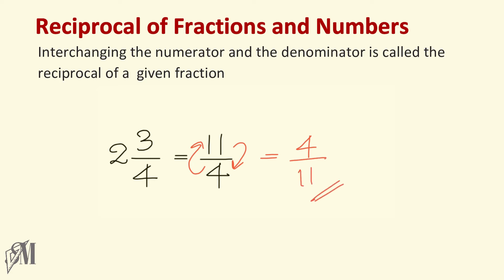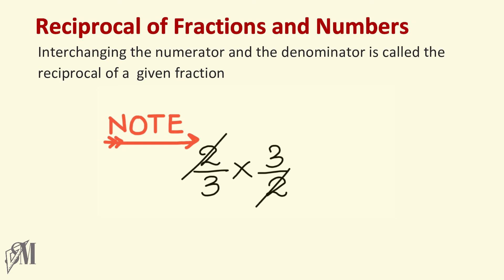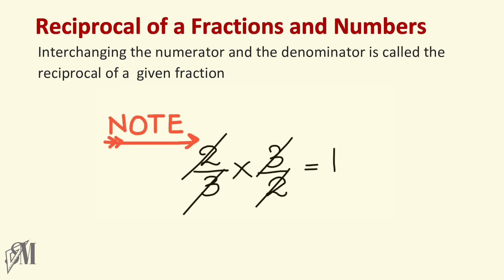Remember this fact carefully: when any fraction — suppose two over three — the reciprocal of it is three over two. When you multiply these two, that is the fraction and its reciprocal, the two will cancel and the three will also cancel, giving you the answer one. Remember, the answer you get when you multiply any fraction or number by its reciprocal is always one.